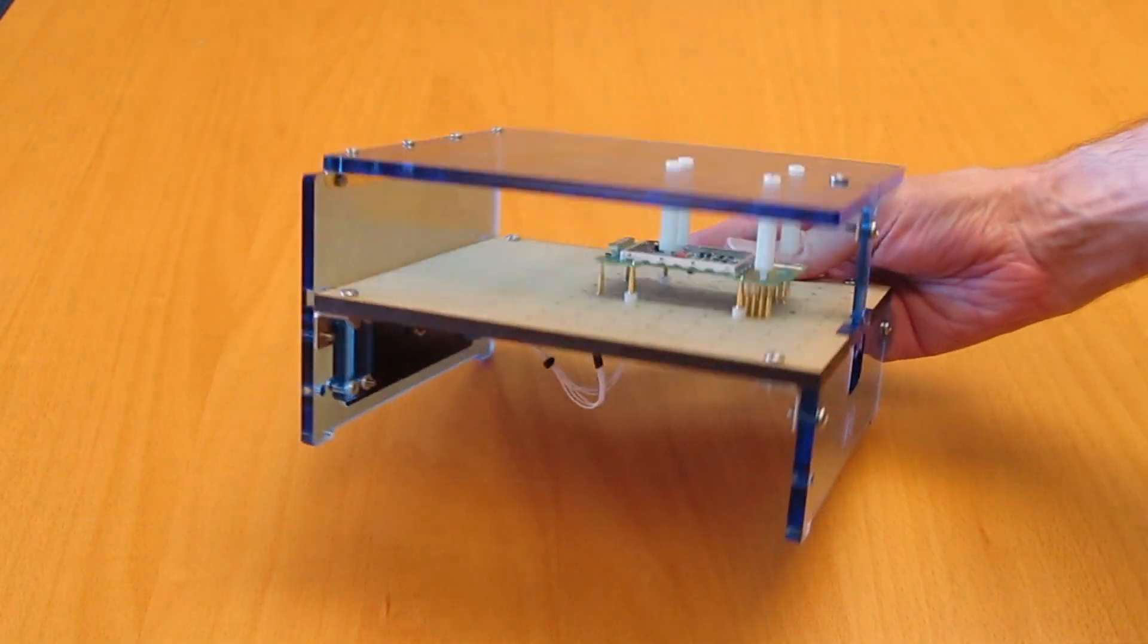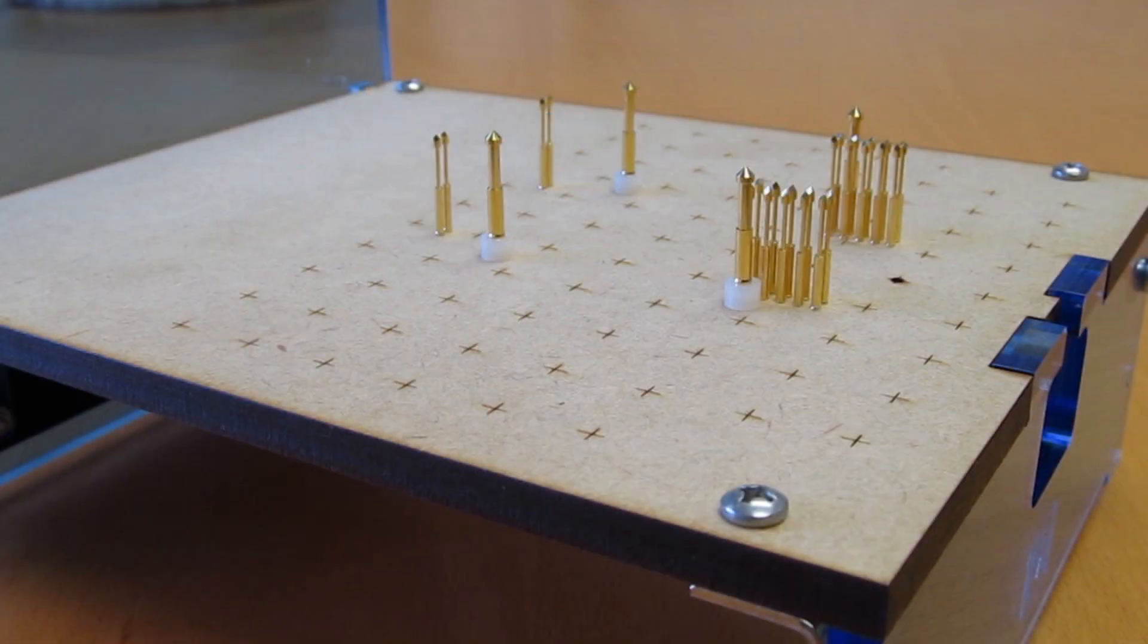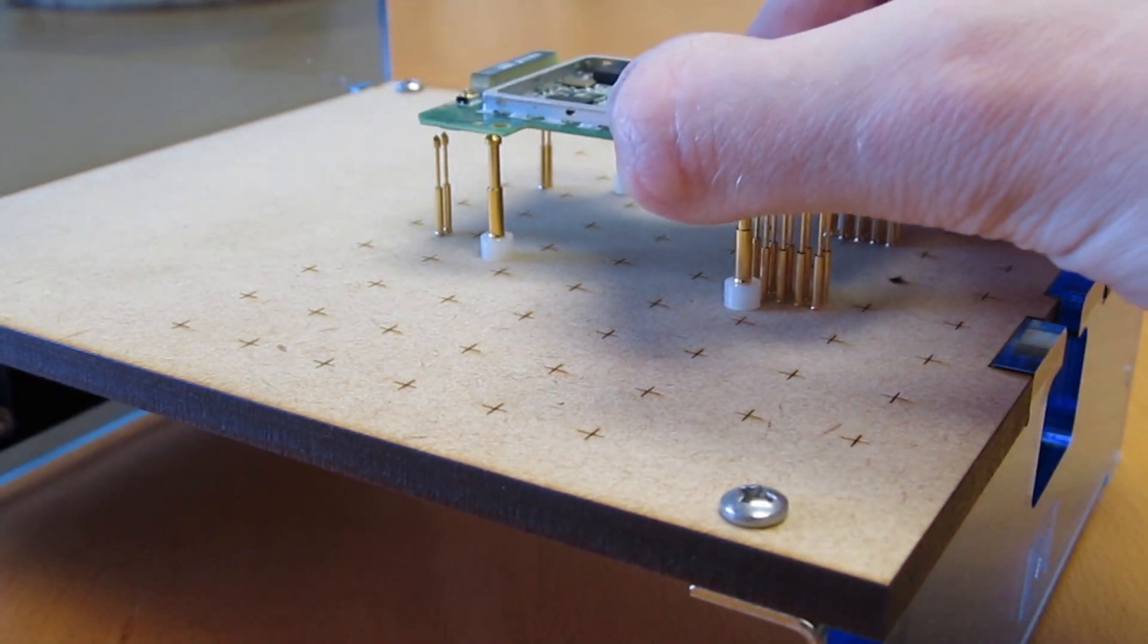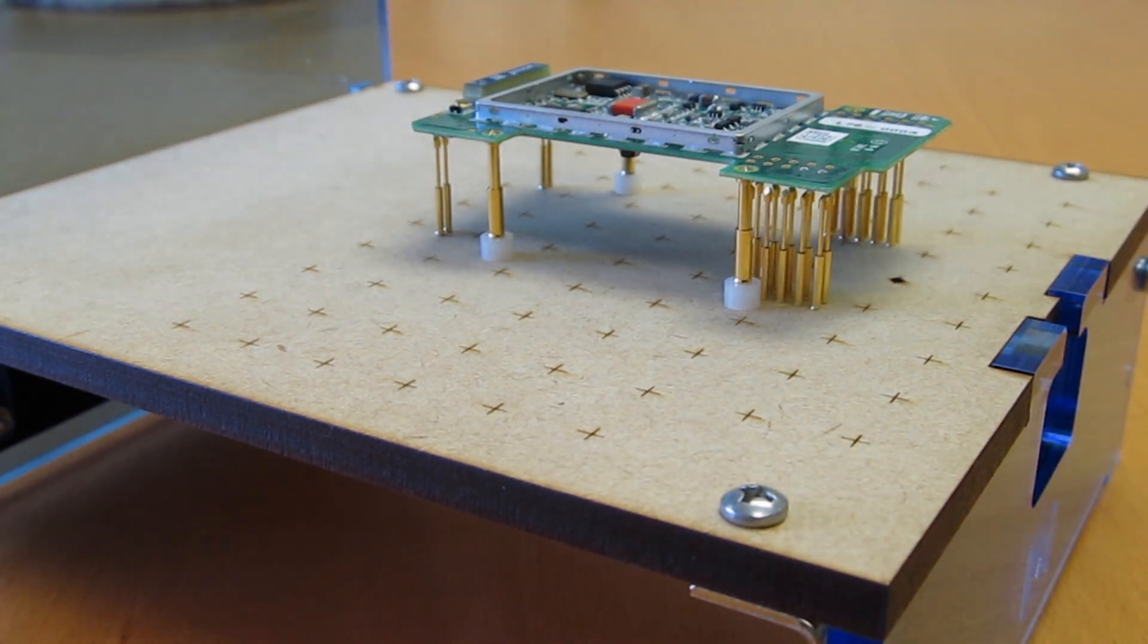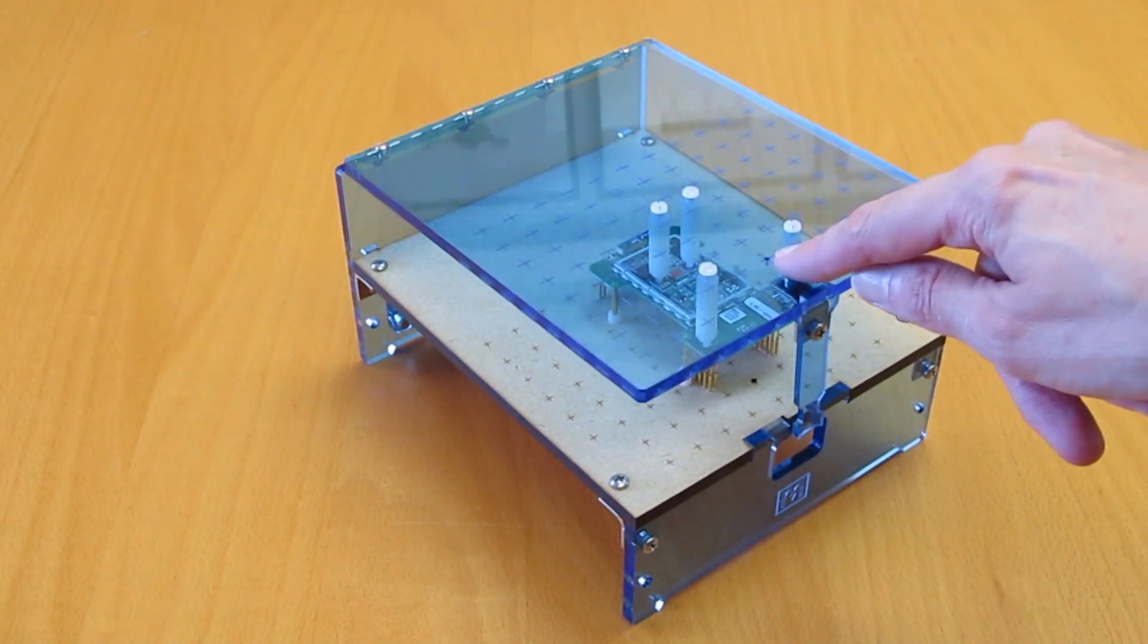Here's an example fixture designed for programming and testing this board. The board is placed on the locating probes, which align the board using its tooling holes. As the fixture is closed, the hold-down posts press on the board.